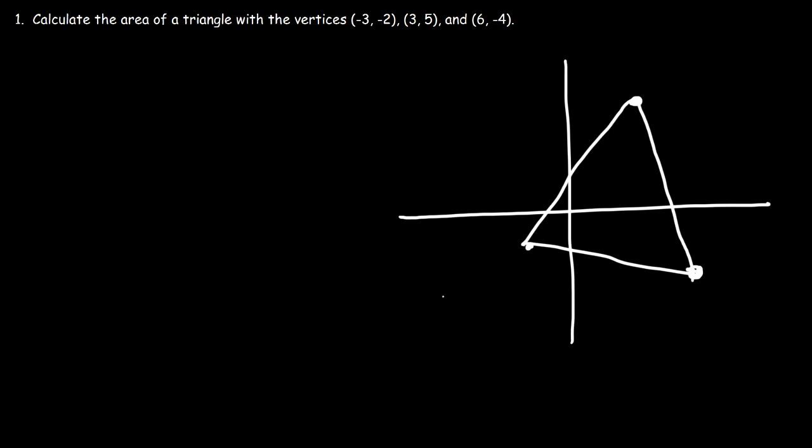So let's call this A, B, and C. A is at negative 3, negative 2. B is at 3, 5. And C is at 6, negative 4. So how can we calculate the area of this triangle?